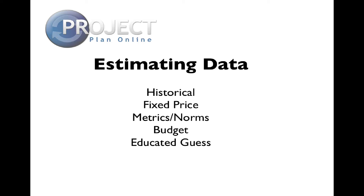Each of these definitions relates to a source of costing. For example, 'historical' means you've done this work before and have an actual cost, so once you escalate the cost based on some type of index, you're pretty confident in the estimate. On the other hand, a budget number might be a number given to you by a vendor which he will not guarantee due to lack of information. So you need to treat it as variable and make appropriate risk allowances.